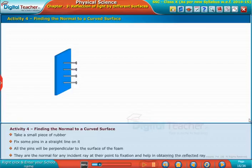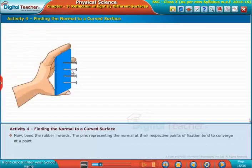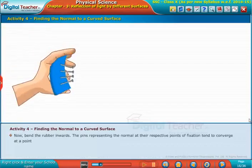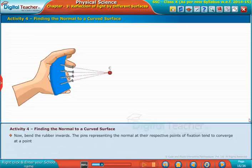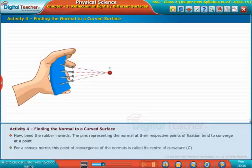This helps in obtaining the reflected ray. Now bend the rubber inwards. The pins representing the normal at their respective points of fixation tend to converge at a point. For a convex mirror, this point of convergence of the normals is called its center of curvature C.